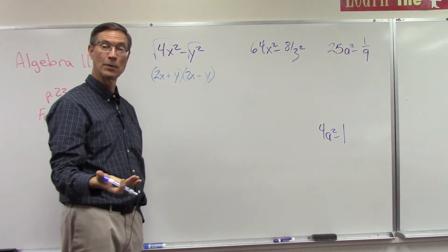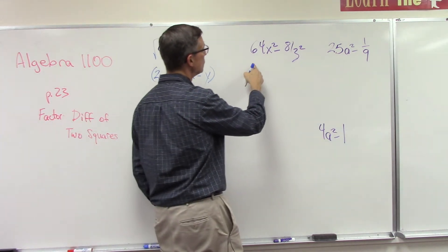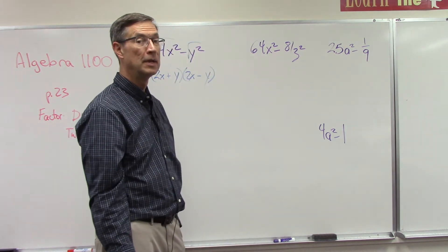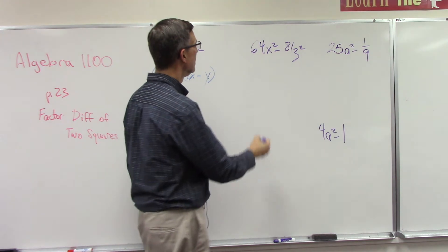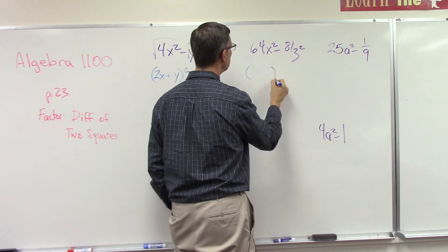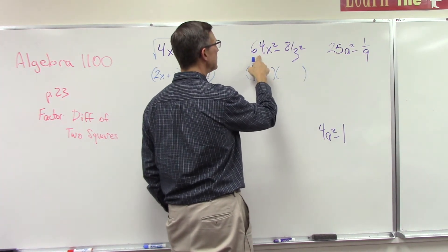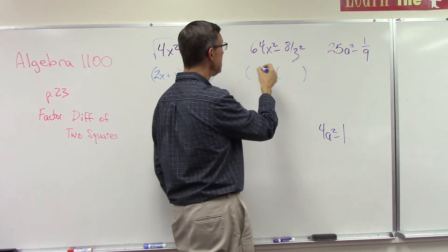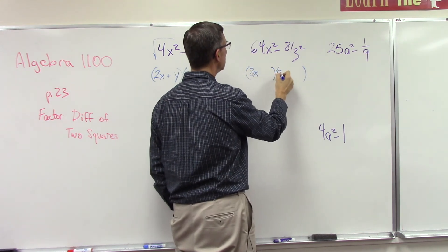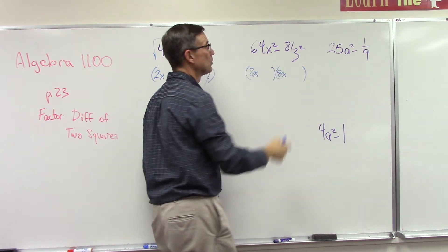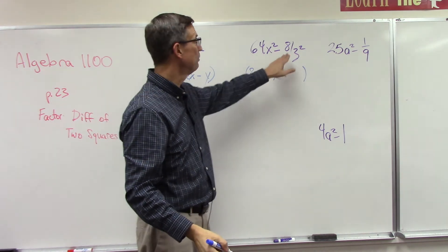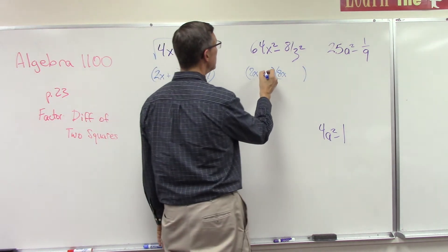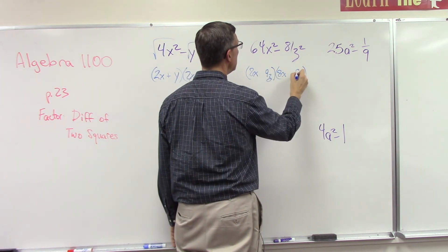Okay, let's take a problem like this one. This looks complicated: 64x² minus 81z². So let's set up the two parentheses. What's the square root of 64x²? 8x. We'll put 8x in the front of both of these. Square root of 81—you know that because 8 plus 1 is 9, so you know it's divisible by 9. 9 times 9 is 81, so I'll do 9z, 9z.